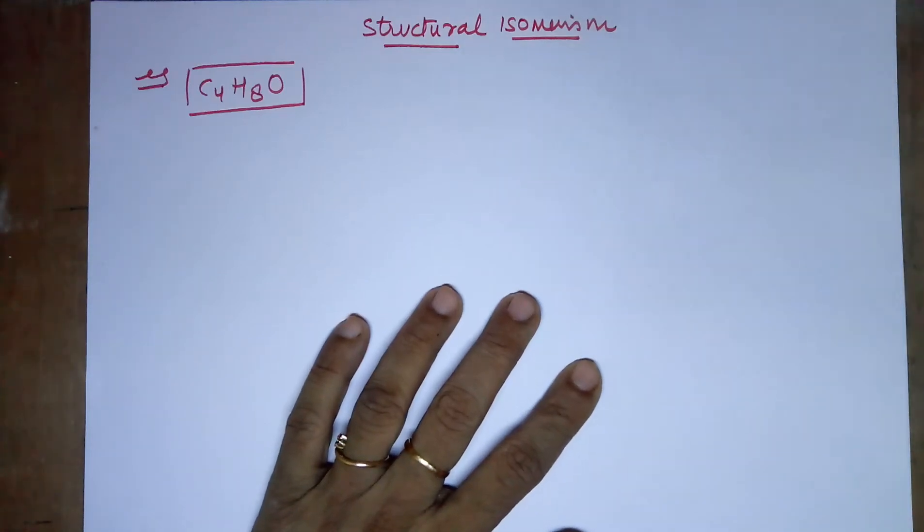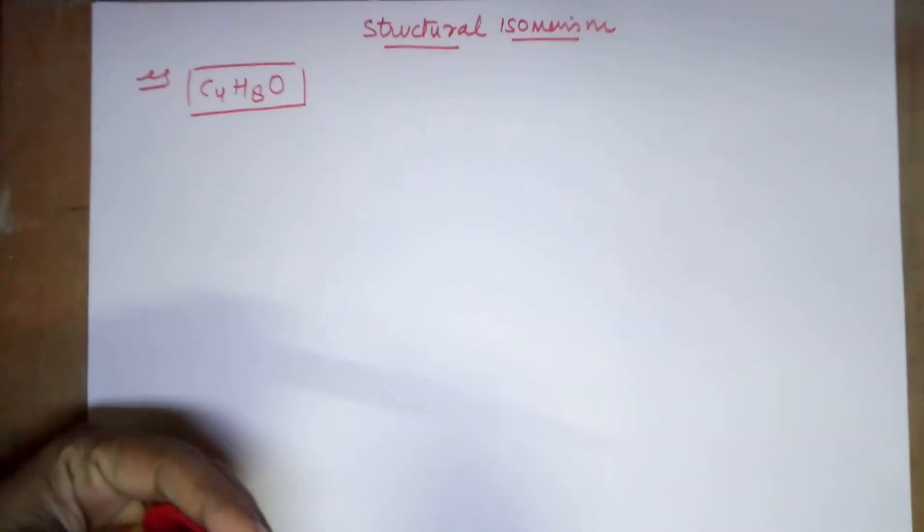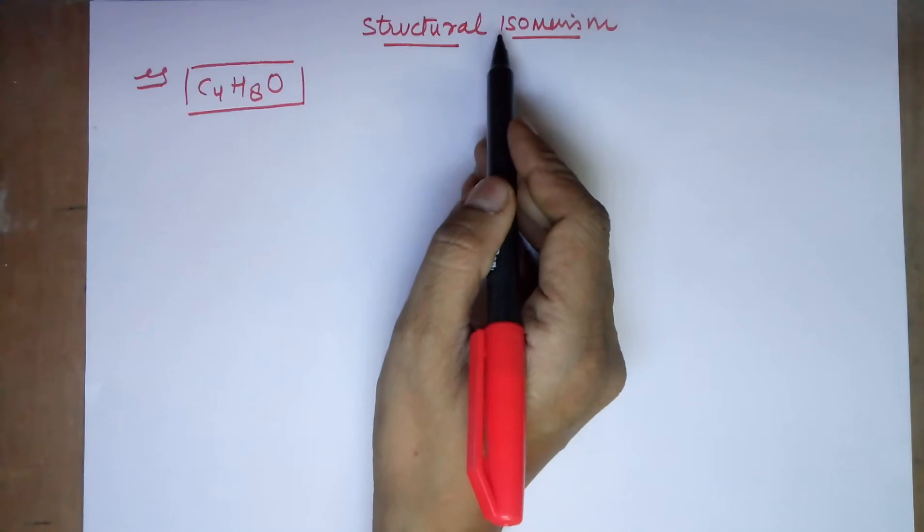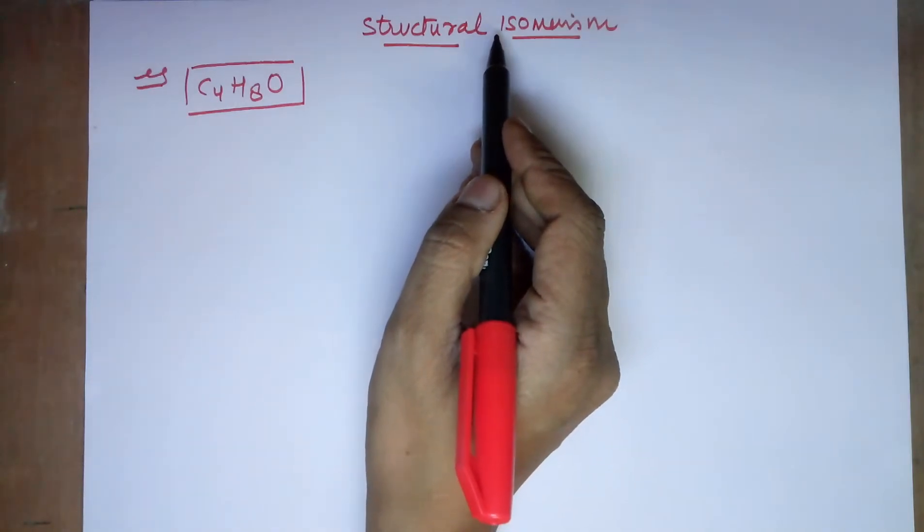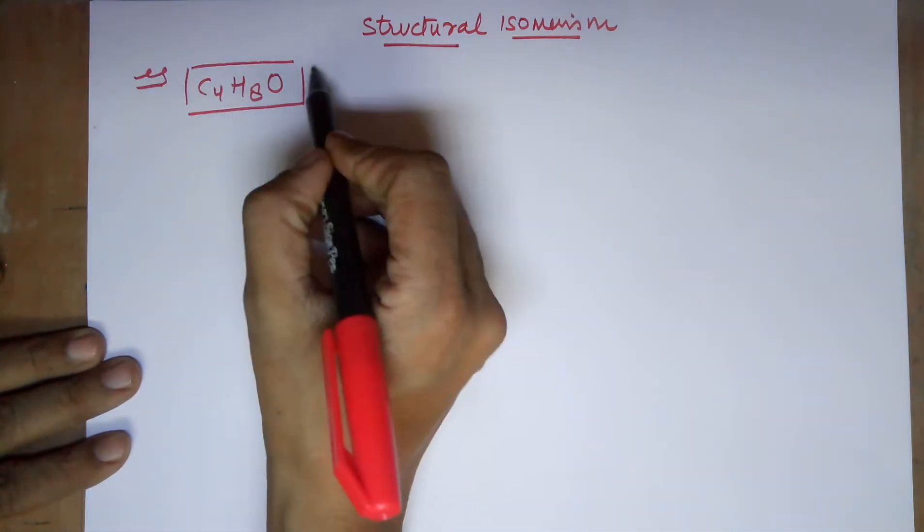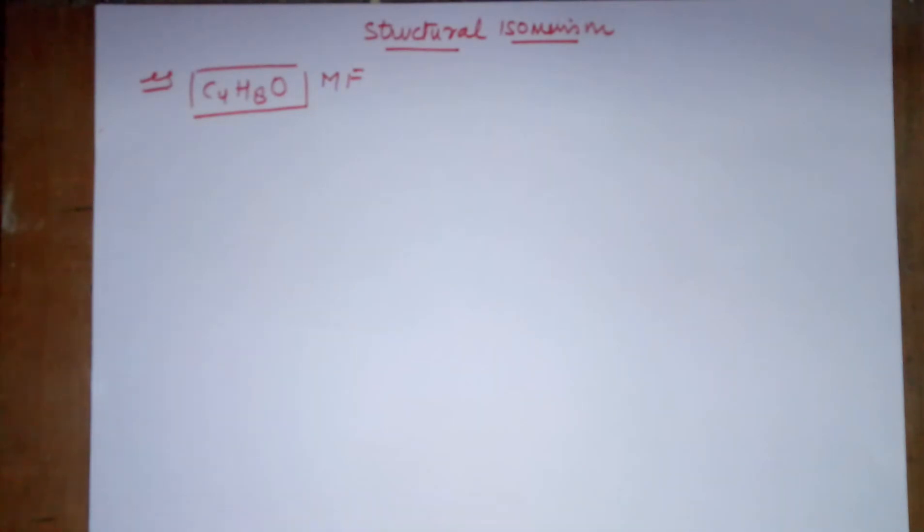Good evening students. We'll move ahead to the structural isomers taking a functional group as an example. Under the category of structural isomers I'll be clarifying furthermore types of isomerisms under this example that I've taken the molecular formula to be C4H8 and an O.